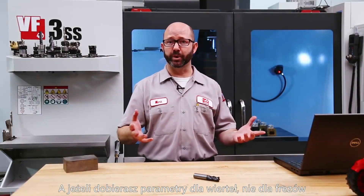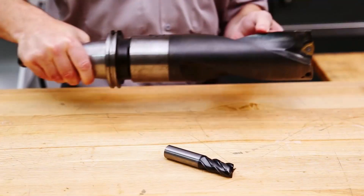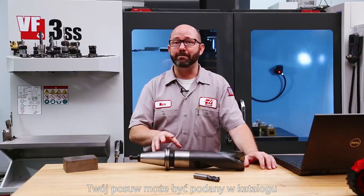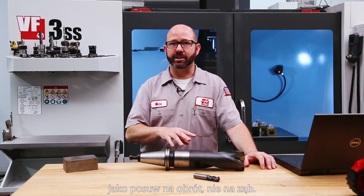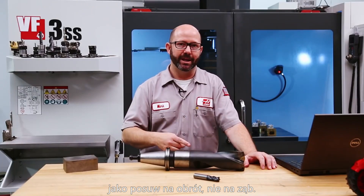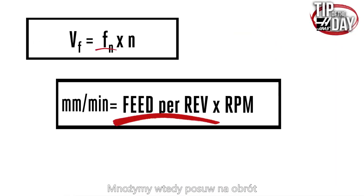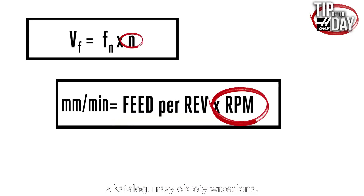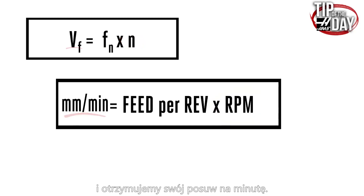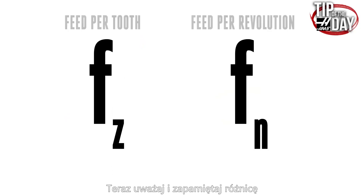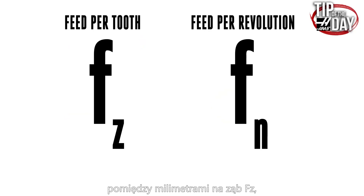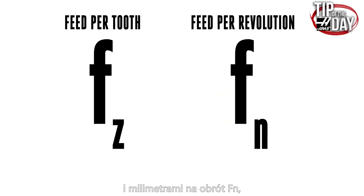Now, if you are dealing with drills and not end mills, your feed rate might be listed in the catalogs as a feed per revolution and not a feed per tooth. We just multiply the millimeters per revolution chip load from the catalog by our RPM to get our feed rate in millimeters per minute. Know the difference between millimeters per tooth, FZ — typically used for milling tools — and millimeters per revolution, FN — which we often use for drills.